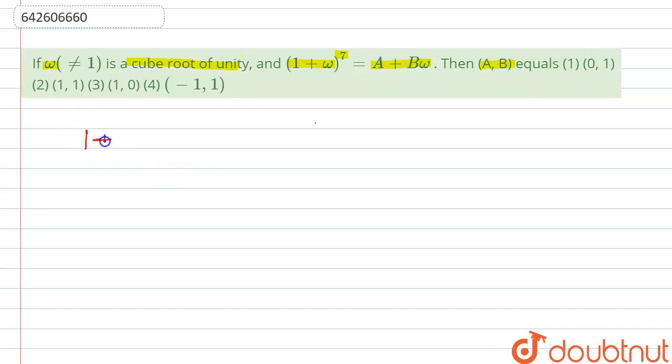So here we have 1 plus omega power 7 represented as A plus B omega, and we have to find the value of A and B.